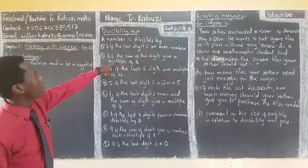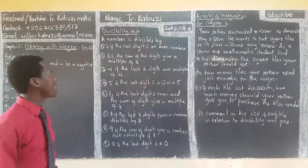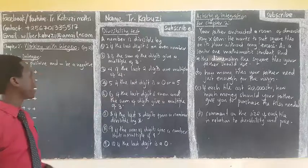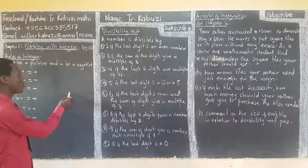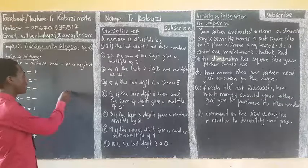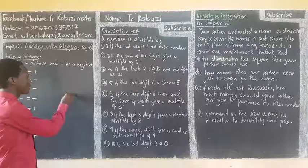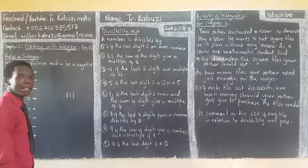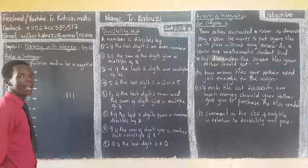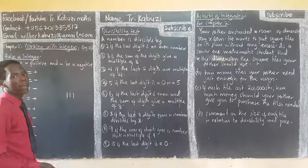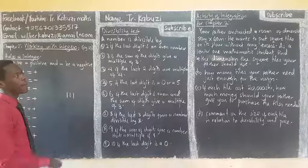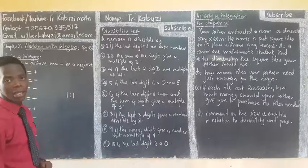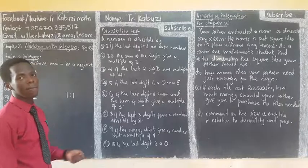A number is divisible by 3 if the sum of the digits is a multiple of 3. For example, if you have the digit 1, 1, 1 — when you add all these digits and what you get is a multiple of 3, then that number is divisible by 3. When you add 1+1+1, you get 3, which is a multiple of 3.